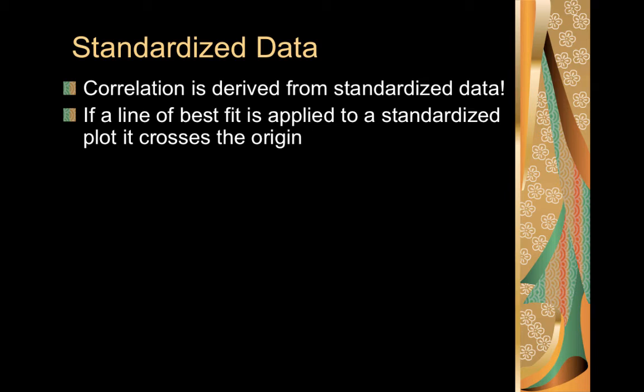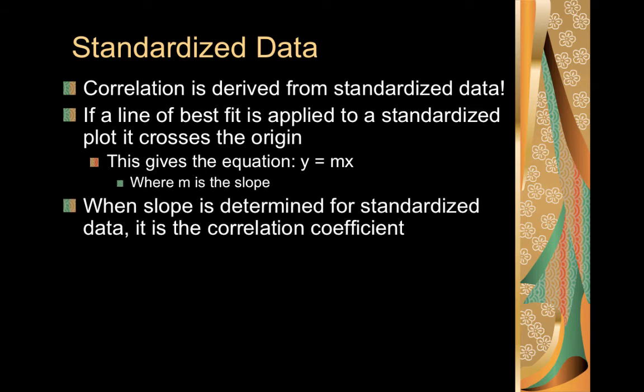If a line of best fit is applied to a standardized plot, it will go through the origin, so the y intercept would end up being zero. We end up with an equation y equals mx, where m is our slope. Applying this to our data, when the slope is determined for standardized data, it ends up being the correlation coefficient.